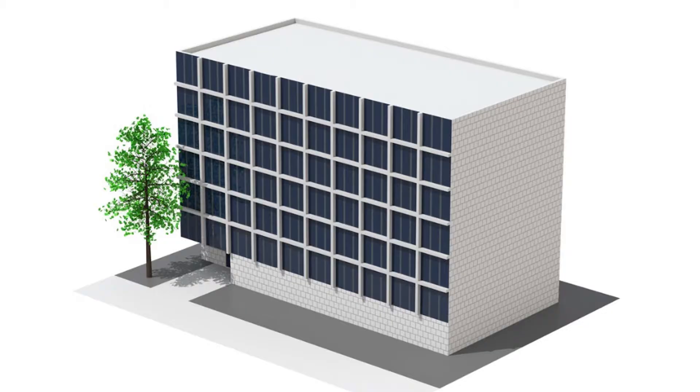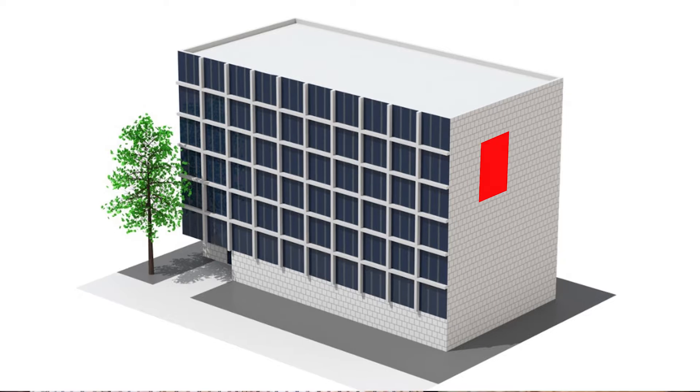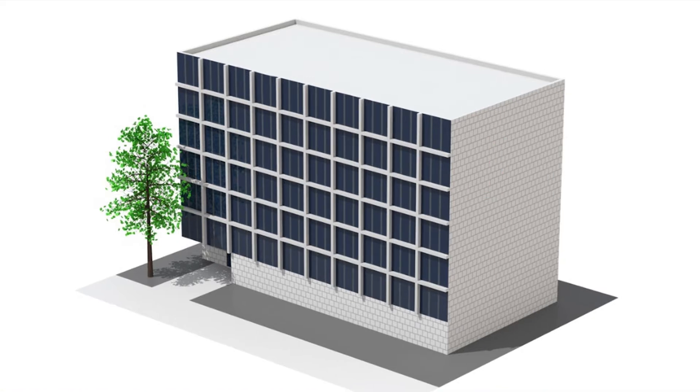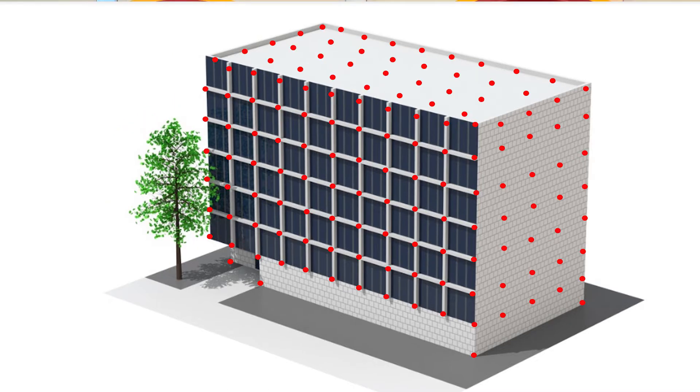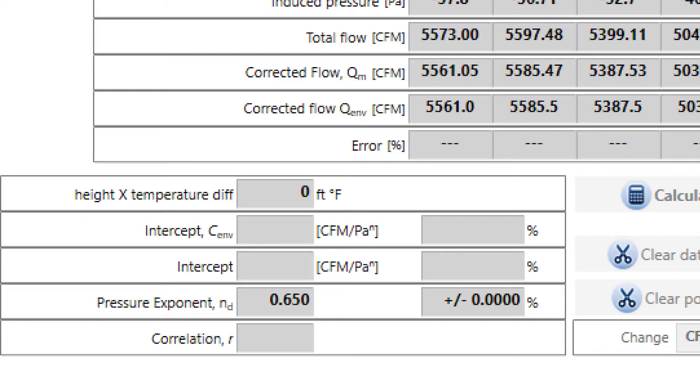One thing that number can tell you — it falls somewhere between 0.5 and 1.0. The closer it is to 0.5, the more of a wide open hole that you have. The closer it is to 1.0, the closer that building is going to have to a bunch of small holes. So that's a good way to tell how that building is leaking by looking at that number. You have to do a multi-point test in order to get that; otherwise it just assumes 0.65.